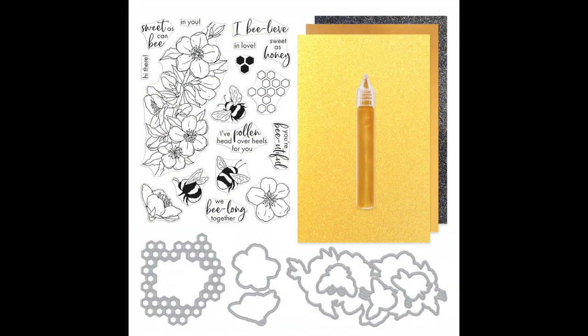The 6x8 set has a large floral image and smaller individual flowers. It also has the cutest chubby bees I've ever seen and some fun honeycomb patterns. There are coordinating dies for the stamp set as well as a fun standalone honeycomb window die. Finally, the kit includes 6 sheets of specialty cardstock in 3 different colors and a gold lacquer pen.